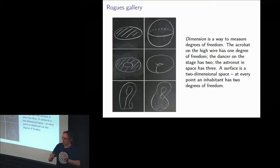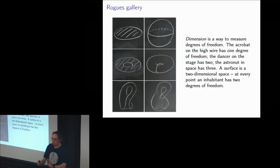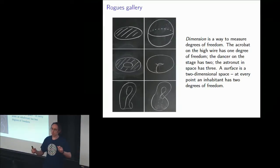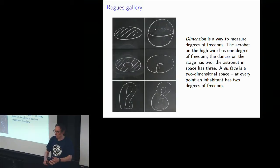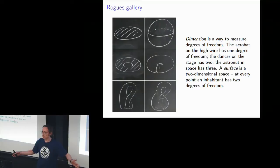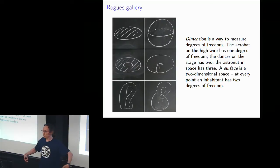For example, if you're an acrobat on a high wire, you basically have one degree of freedom — you can move backwards and forwards. Backwards is the negative of forwards, and positive and negative numbers fit into a line, so that's just one degree of freedom. If you're an ice skater on a rink or a person walking on a stage, you have two degrees of freedom: forwards and back, right and left. And if you're an astronaut in outer space with a jet pack, you have a full three degrees of freedom: up and down, as well as backwards and forwards and right and left.